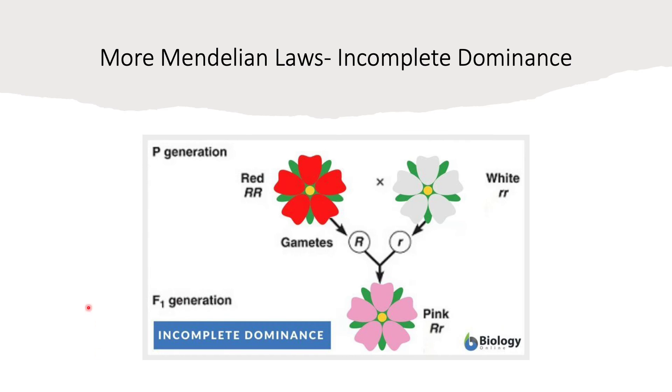Let's look at more additions to Mendelian laws. This is going to be incomplete dominance. So basically what we have here is our P generation, our parents, our true-bred parents. Big R, big R, red flower. Little r, little r, white flower. In the other example, if this is dominant and this is recessive, we're going to see it's going to be red. But when it's incomplete dominance, the F1 generation, you get a combination of it. You get pink. Big R, little r, the heterozygote, is going to be pink instead of red. This is incomplete dominance. It's not fully dominant. So you get an in-between, pink.